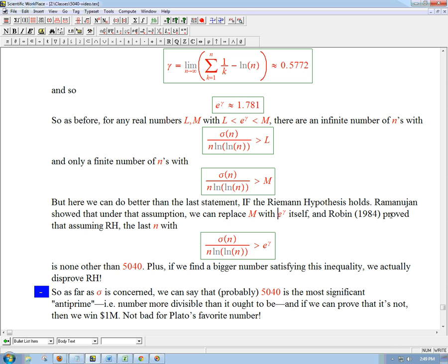And Robin, or Robin, I'm not sure, actually, in 1984, pretty recently, proved that, again, assuming the Riemann hypothesis, that the last n that actually violates that bound is none other than good old 5040. So that's pretty cool. Now, it's conditional on the Riemann hypothesis. So nobody's absolutely sure that there isn't a violator. But this is actually an if and only if. If we find a bigger number than 5040 that is so surprisingly divisible so that this measure is bigger than the magic number, then we actually disprove the Riemann hypothesis. It would conceivably be a way to disprove the Riemann hypothesis.